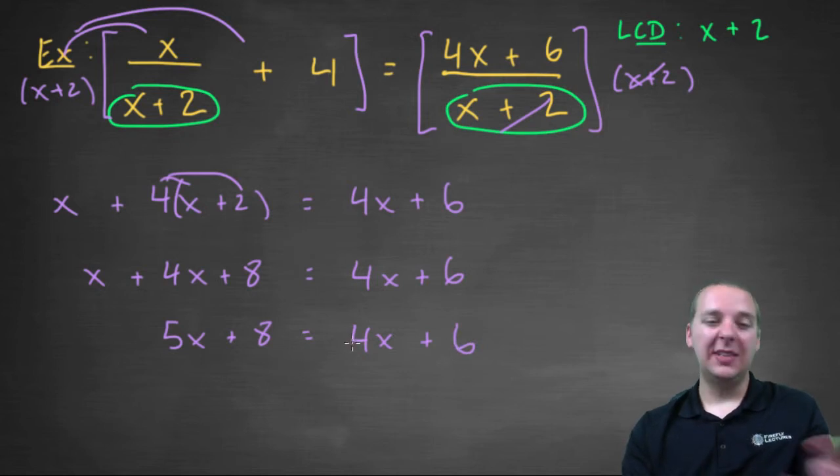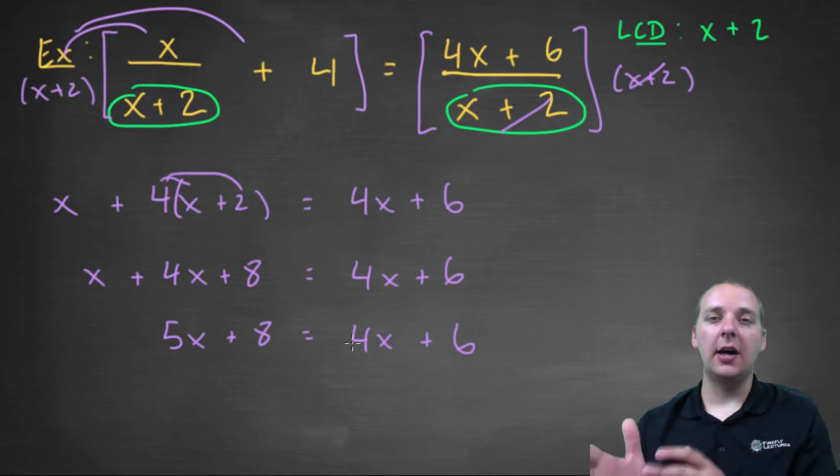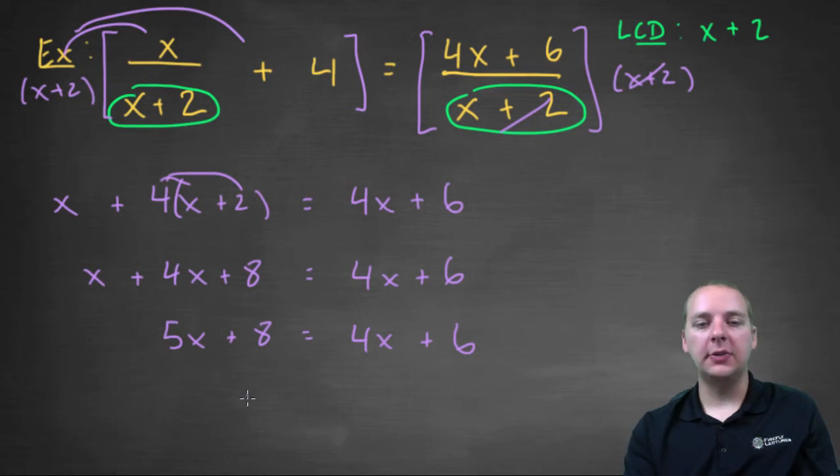This is a linear equation, which you should be really good at solving by now. Linear equations, as you well know, you put the variables on one side and the constants on the other. So we'll subtract 4x to the left, 5x minus 4x just gives us x. And we'll subtract the 8 to the right, so 6 minus 8 is negative 2.